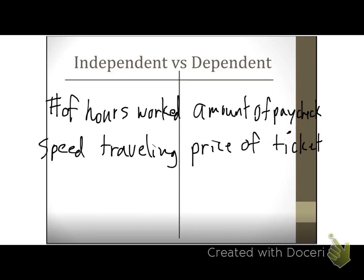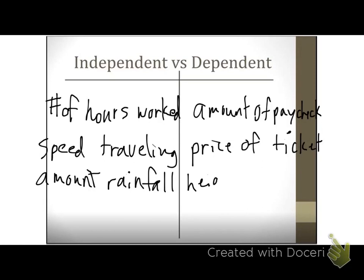I have a front yard and backyard I have to mow. What makes grass grow faster? Water. So if it's raining a lot, my grass is going to be a lot taller than if it's not raining very much. The independent variable is the amount of rainfall, and the dependent variable is the height of the grass. The height of the grass depends on how much water it's getting.